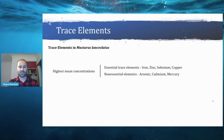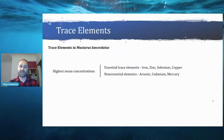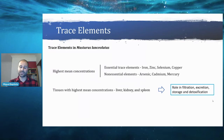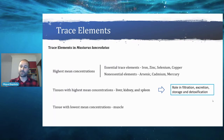Regarding Masturus lanceolatus, the highest mean concentrations of essential trace elements were found for iron, zinc, selenium, and copper, whereas for non-essential elements, the higher ones were arsenic, cadmium, and mercury. The tissues with highest mean concentrations were the liver, kidney, and spleen — natural results since they have roles in filtration, excretion, storage, and detoxification. Similarly, the tissue with the lowest mean concentration was muscle, which has a minimal function in metabolism.